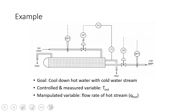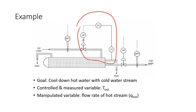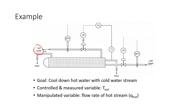Here's an example of a standard feedback control system where hot water is coming in and goes through a heat exchanger. On the shell side we have hot water, and on the tube side we have cold water coming in and leaving. The goal is to cool down the hot water before discharging it, using cold water from a cold water supply, while keeping the two streams separate.